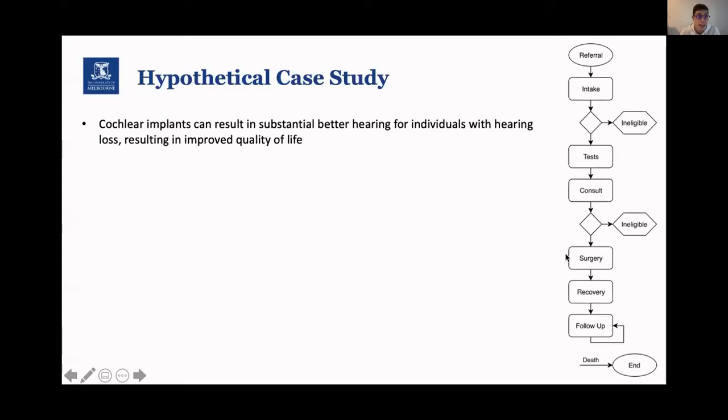The process for getting a cochlear implant, highly simplified for the sake of this illustration, starts with a referral, after which there is an initial intake to check the eligibility of the individual. Then, for those who are eligible, there is a series of tests and a final consult, in which is discussed whether the individual actually will move forward to surgery, where the implants are implanted. After the surgery, there is a period of recovery for the individual to get used to the new implants, after which there is a follow-up process, where the individual returns every five years.